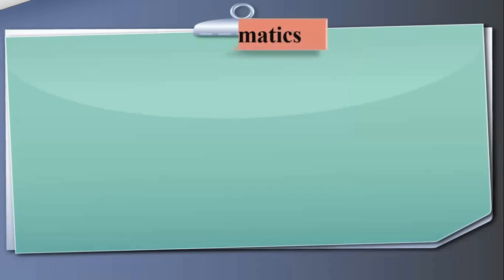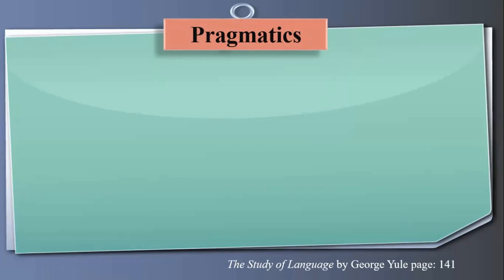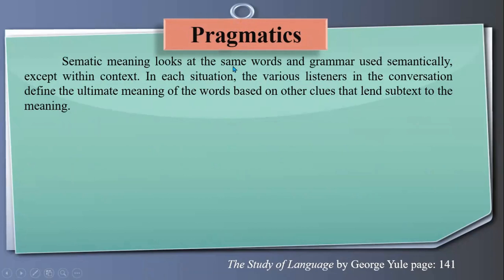Now we are going to talk about pragmatics from the book The Study of Language by George Yule, page 141. According to George Yule, semantic meaning looks at the same words and grammar used semantically except within context. The only difference between semantics and pragmatics is context: in semantics we use the dictionary meaning of the word or sentence, but in pragmatics we talk about meanings within context.